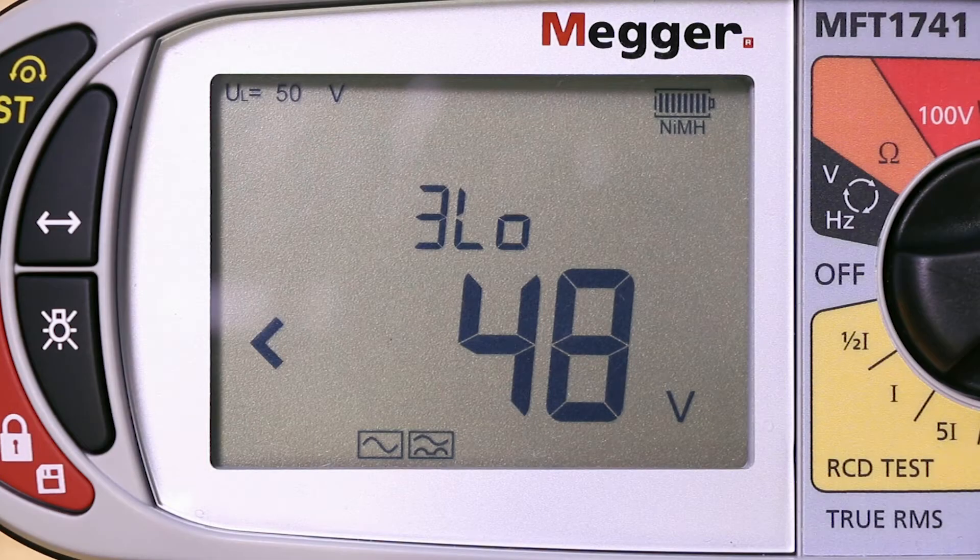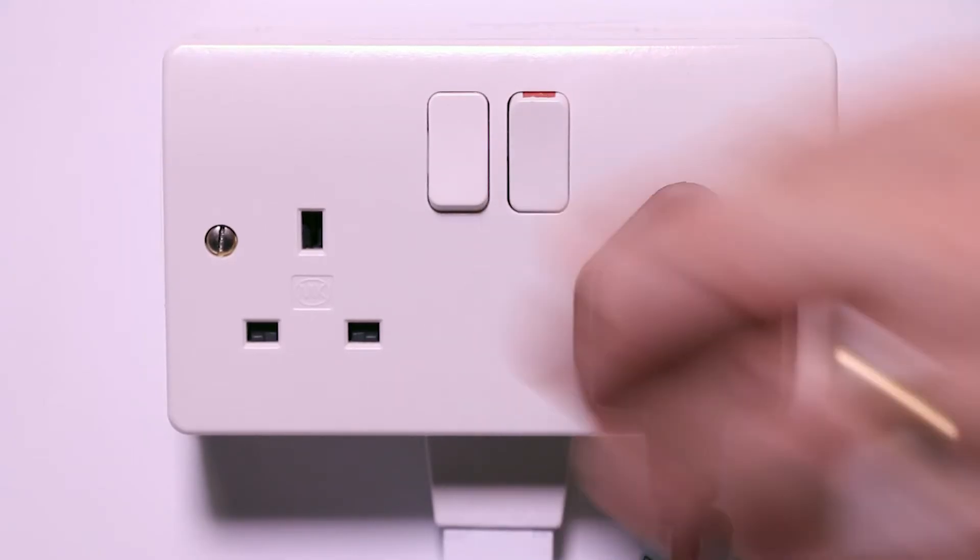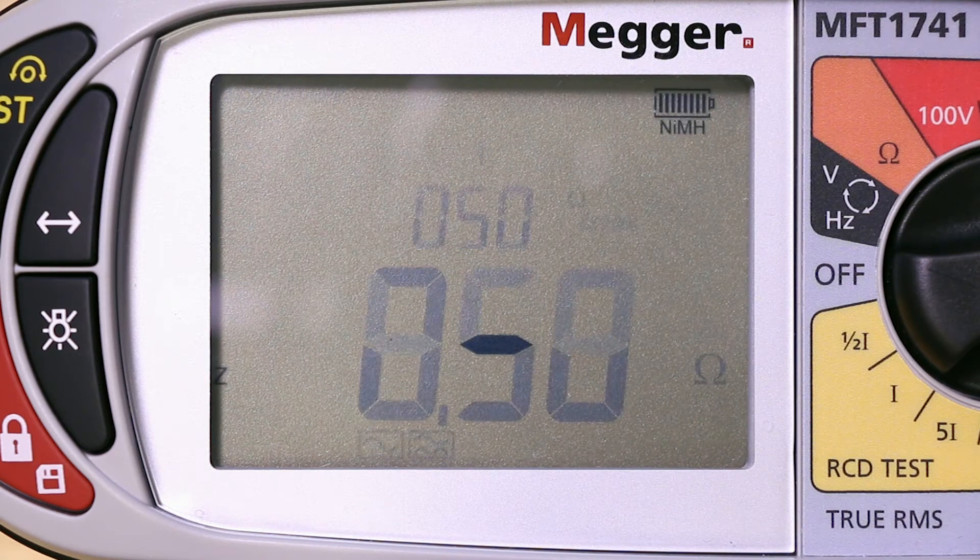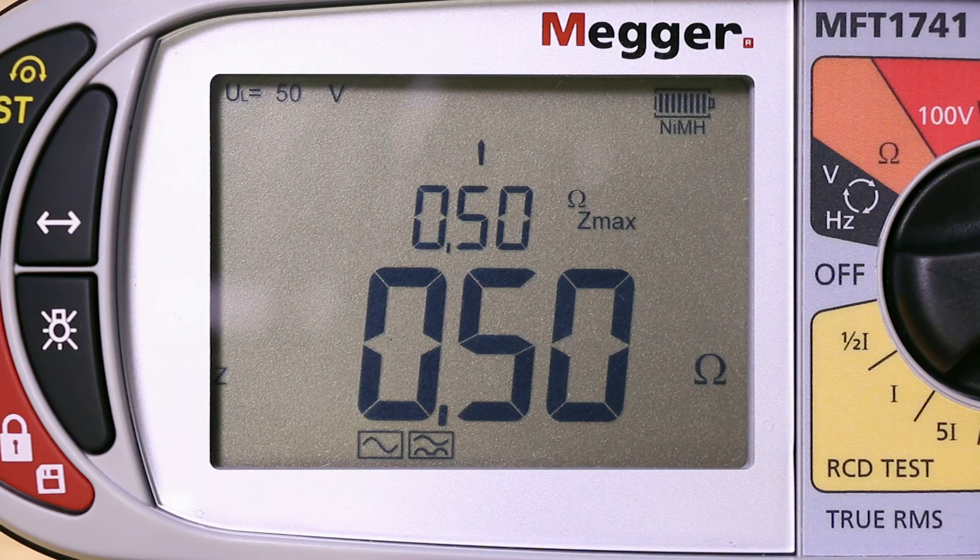To demonstrate this, we will perform a three-wire no-trip test, simulating testing on a standard socket outlet. The unit is set to auto start and you can see the reading is 0.5 ohms.